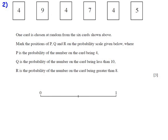So next question is a little bit similar. It says that 1 card is chosen at random from the 6 cards shown above. So there's 6 cards. Mark the positions of P, Q and R on the probability scale given below. So here's our probability scale from 0 to 1. Now P is the probability of the number on a card being 4. So let's start off with P. What's the probability of the number on a card being 4?